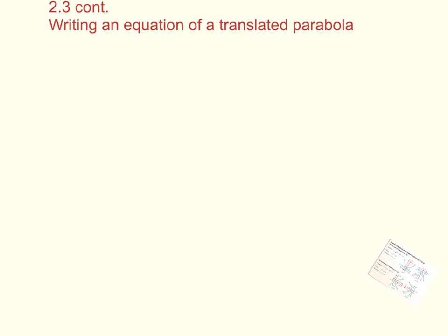So we're going to continue with 2.3, and today we're going to talk about writing an equation of a translated parabola. What that means is a translated parabola is basically the vertex of a parabola is not always at the origin. So if it's not at the origin, we can't use what we've been doing previously.